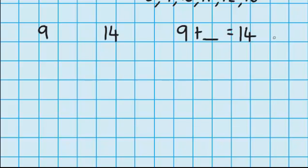So just like in the other examples I'm going to count on from 9 until I get to 14. So I'll have 10, 11, 12, 13, 14.